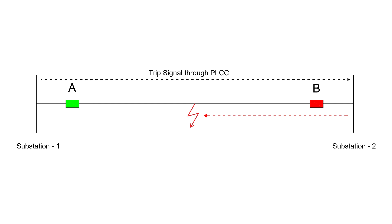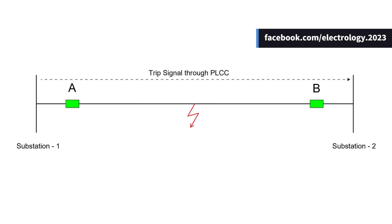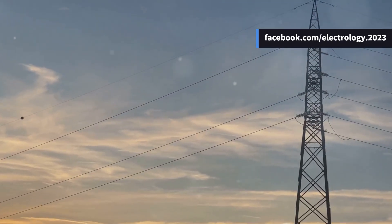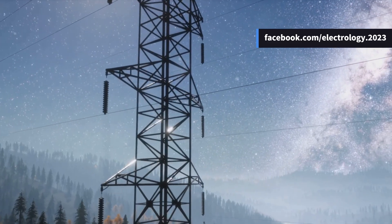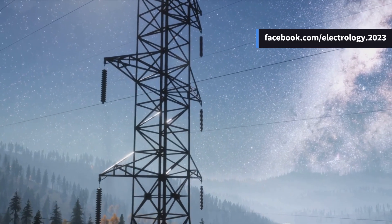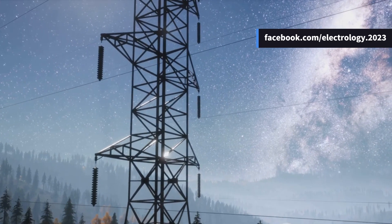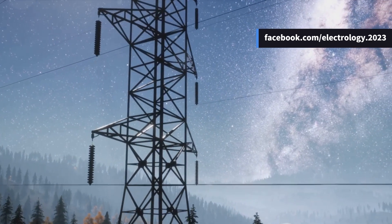This trip signal is crucial to ensure that the breaker at Station 2 also opens, isolating the fault entirely. Aside from the direct trip signal, PLCC also transmits signals for auto-reclosure to ensure quick restoration of the system. Now, let's break down the main components of a Power Line Carrier Communication system. Each part plays a vital role in the operation and protection of the power system.